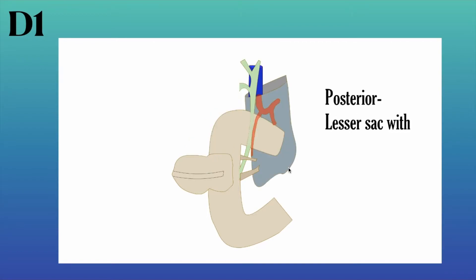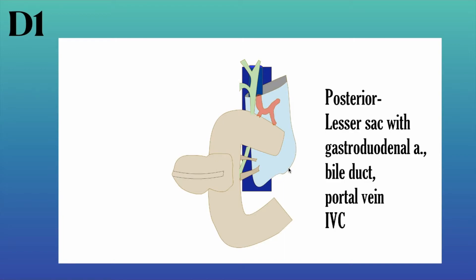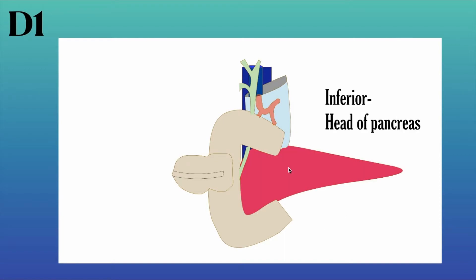Posteriorly: the lesser sac with the gastroduodenal artery, the bile duct, the portal vein, and behind that the IVC. Inferiorly: the head of the pancreas.